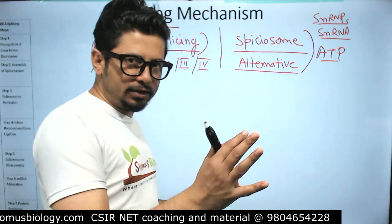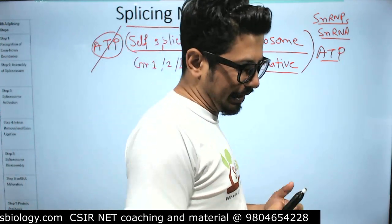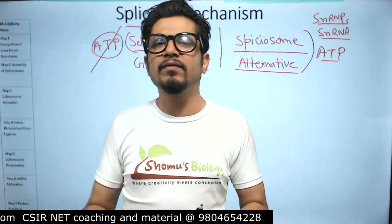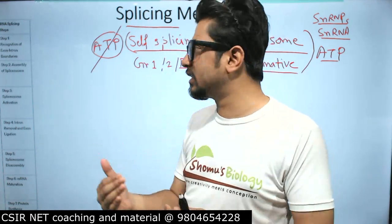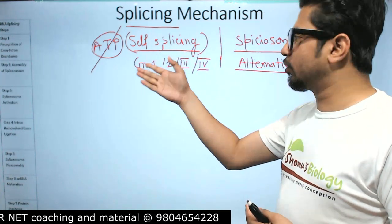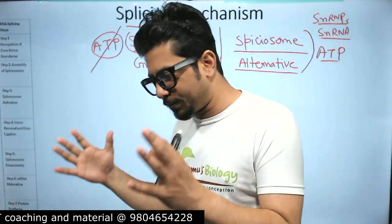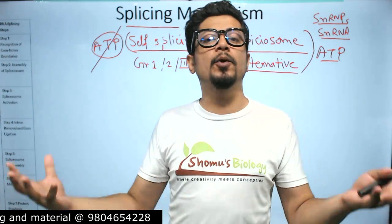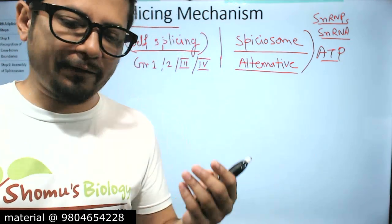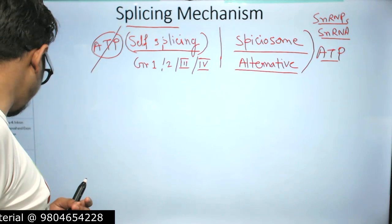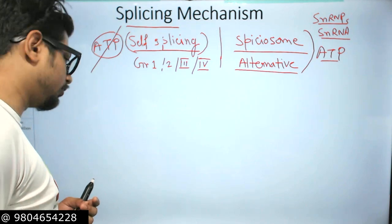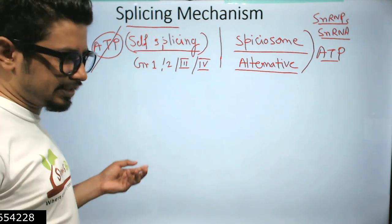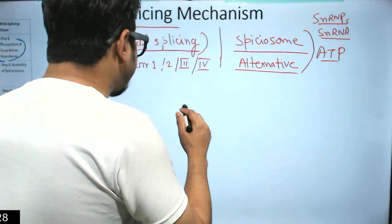Alternative splicing will be discussed in detail in the next lecture. Without further delay, let's go into the steps of the splicing mechanism. The mechanism is very similar between group 1, group 2, group 3 self-splicing and spliceosome-mediated splicing. The main difference is in the proteins involved and the level of complexity.